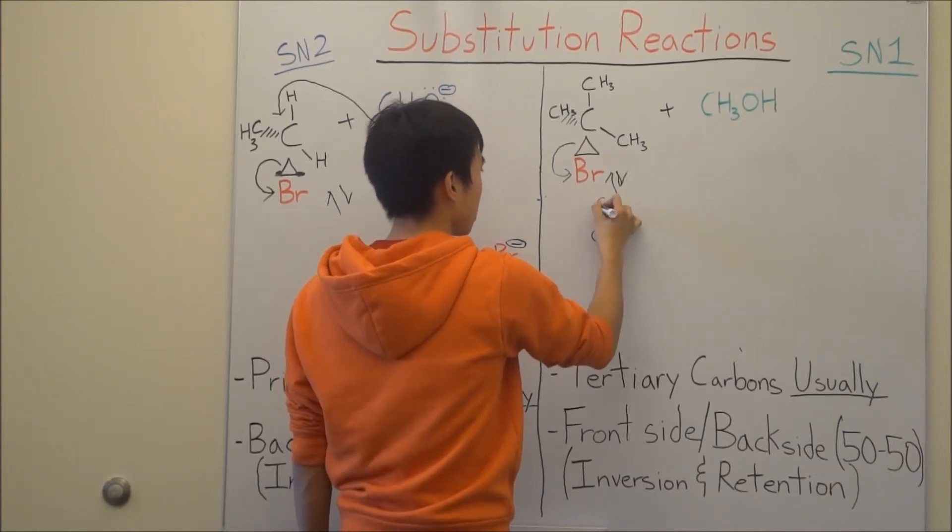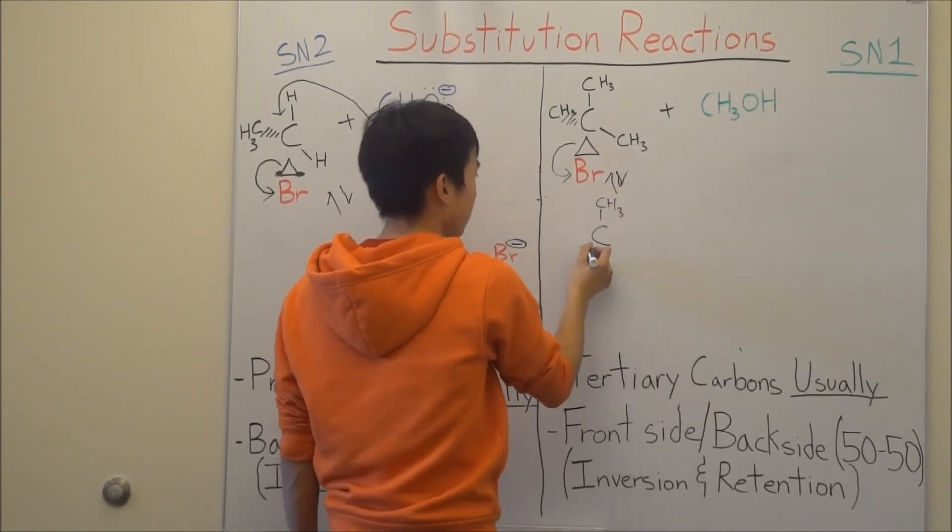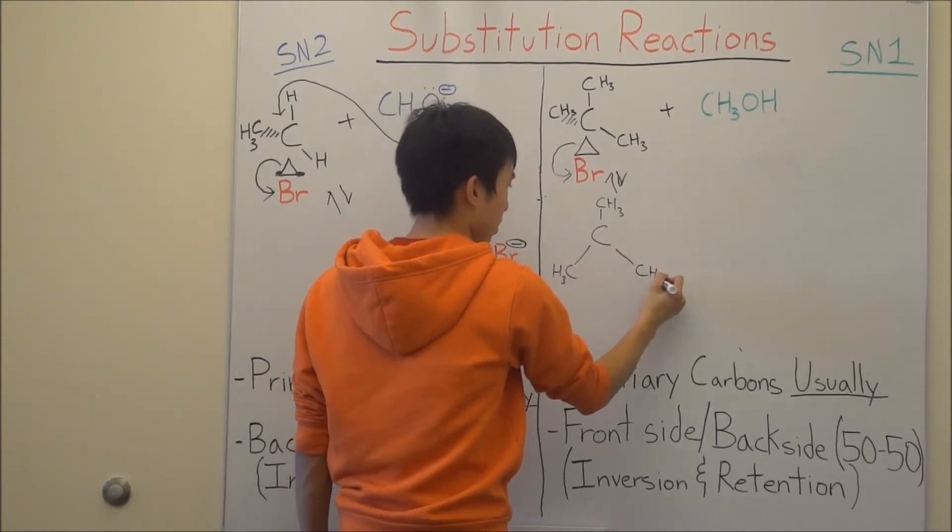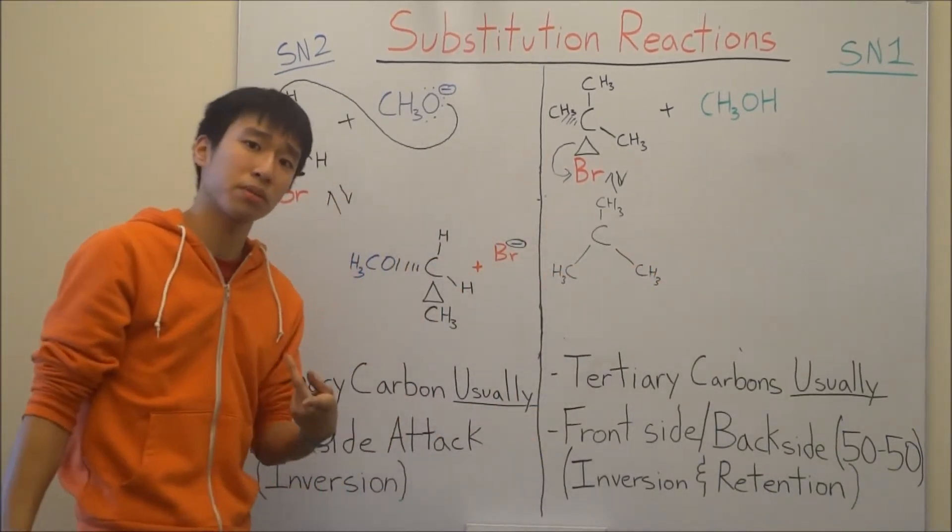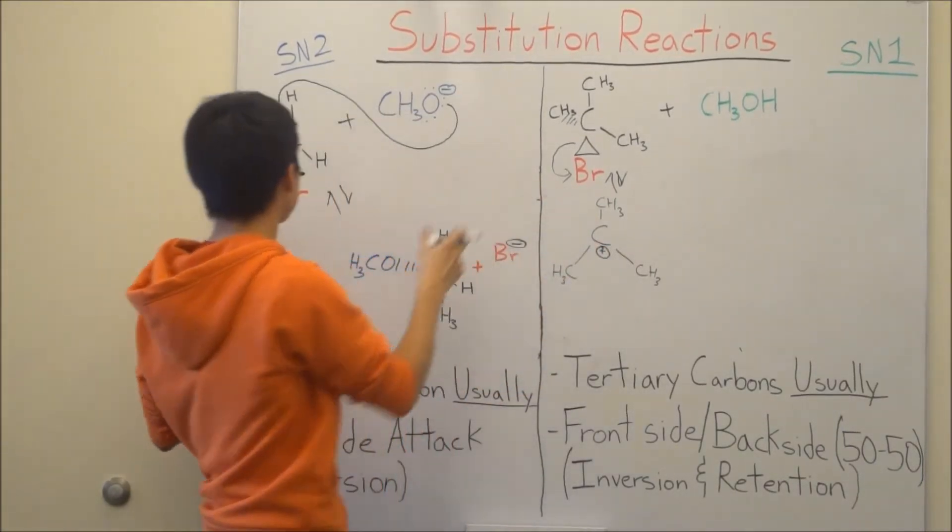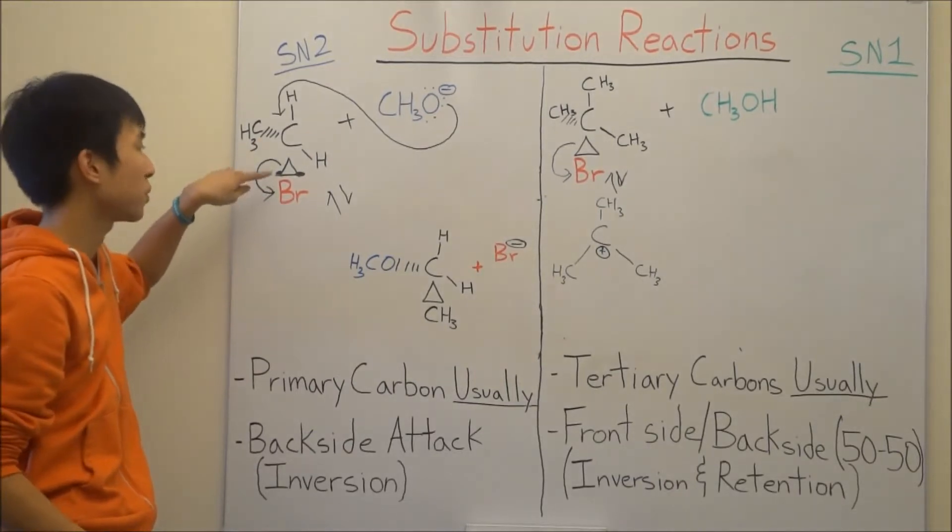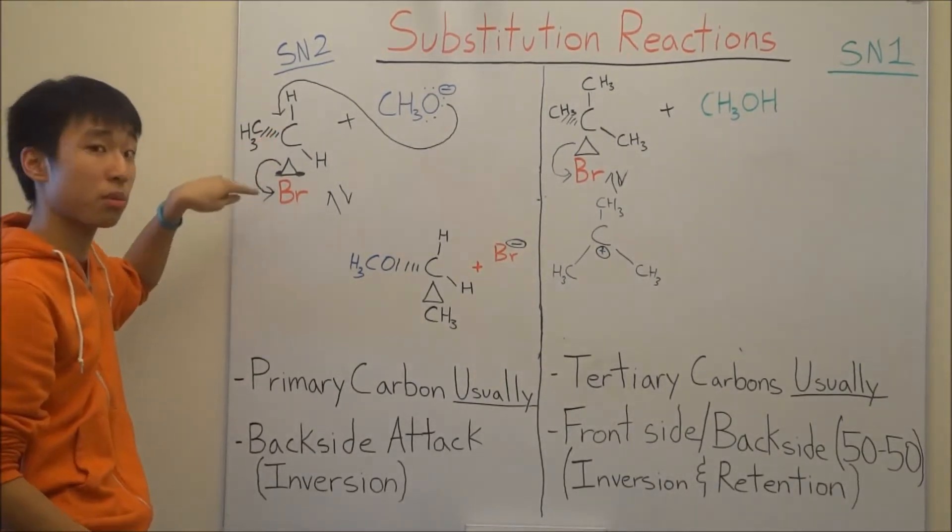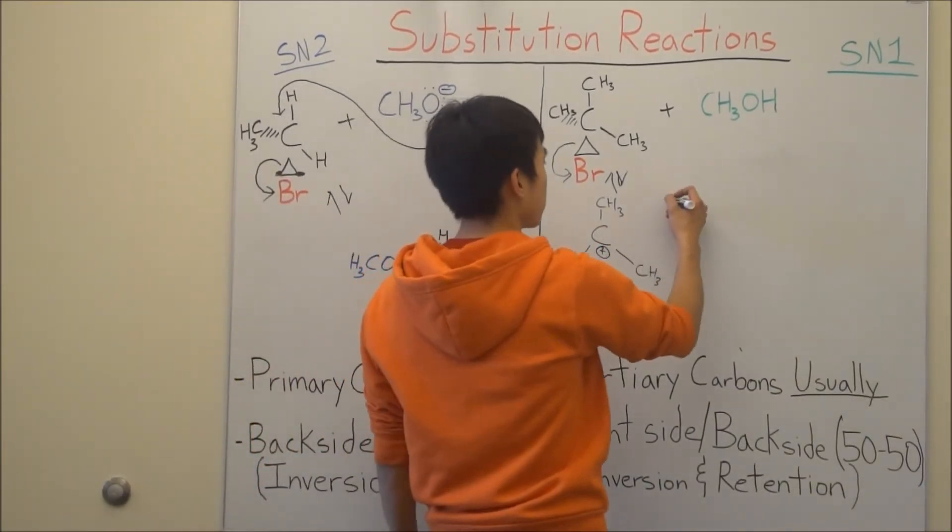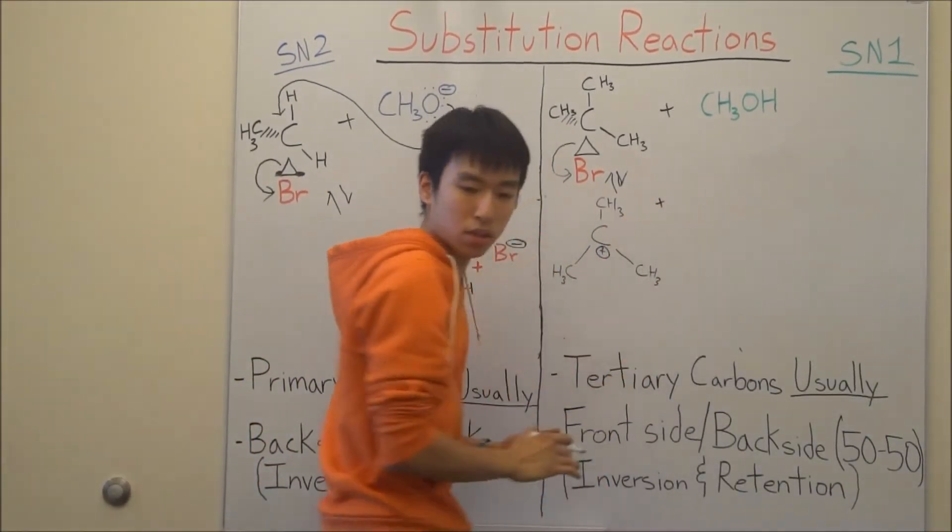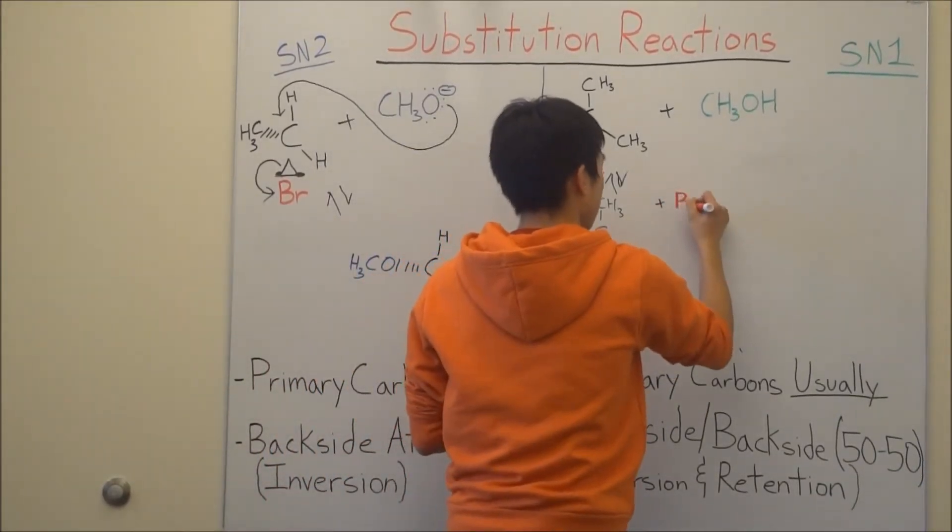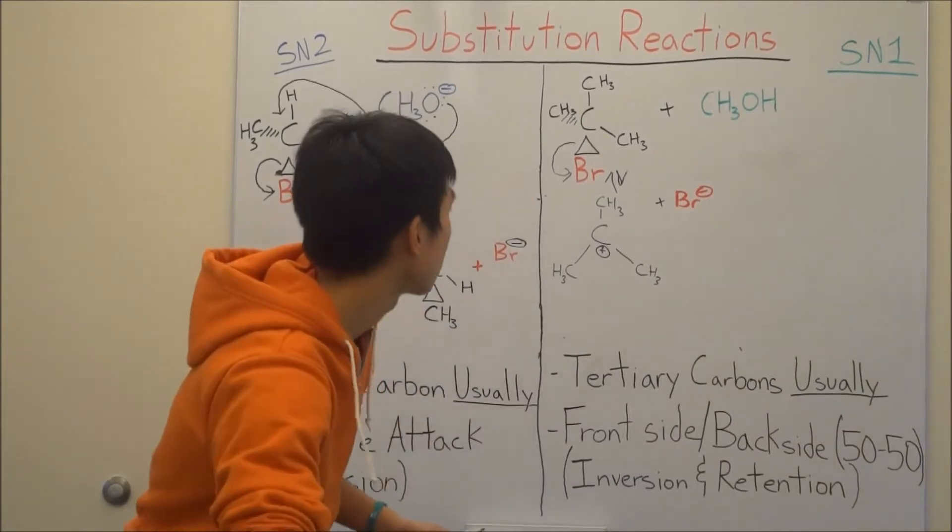But, you get CH3, CH3, CH3. Okay, but are you done though? No, because you're missing a positive charge here. Like before, with the electrons being shared between the carbon and bromine, the bromine took it, so now the carbon has a positive charge. And then you also have a Br- over here.